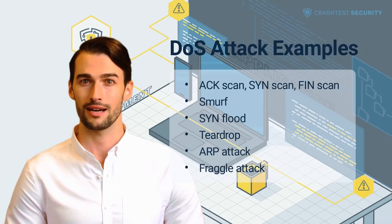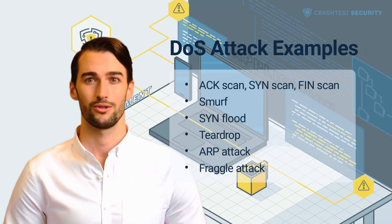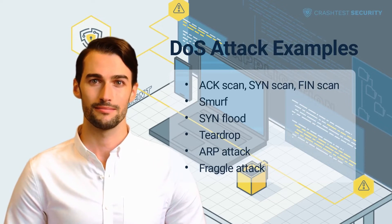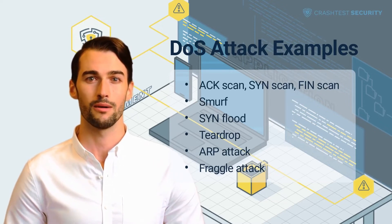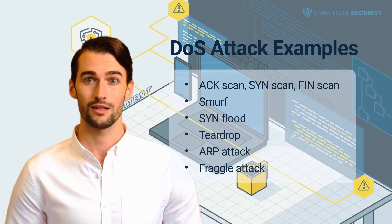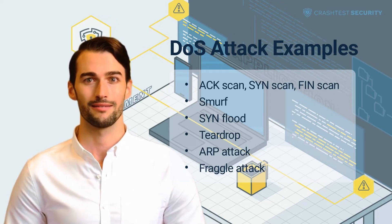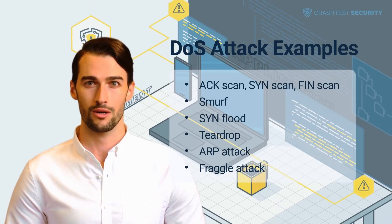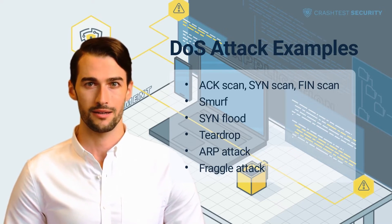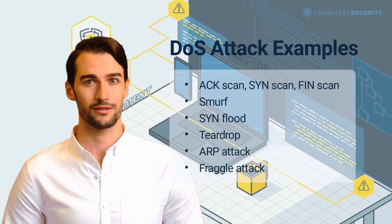There are several examples of how a DDoS can be executed depending on the target's server vulnerability. Some have fallen out of use because their vulnerabilities have been removed, whereas others persist and are being used. ACK Scan, SYN Scan, and Fin Scan use similar approaches to check whether ports at the attack target are open and can be exploited. They are used to gather information as well as deny service.